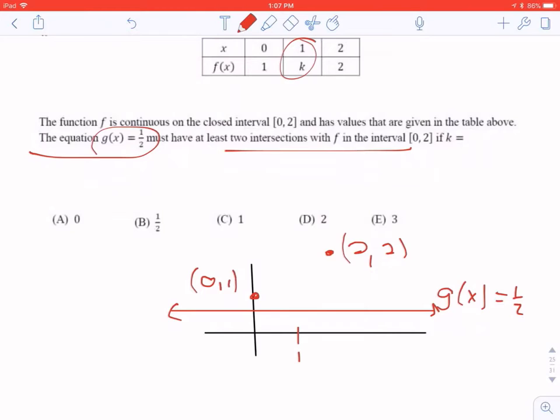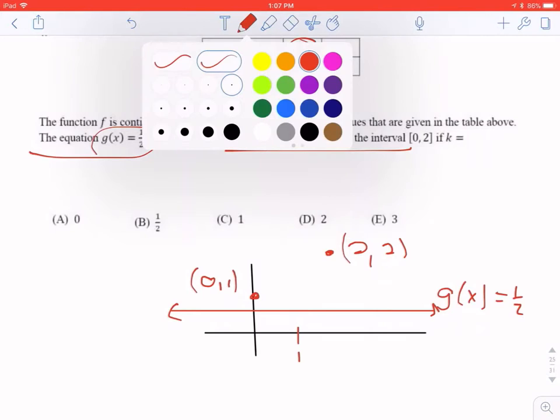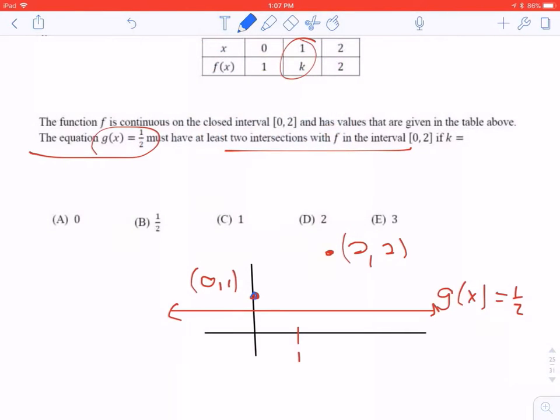So the function is continuous, and the equation g of x, that's this red line here, must have at least two intersections with f. So f is a function that has to go through this, it has to go down here, and it has to go back up to get to 2. We know it has to go down there because there's at least two points of intersection. So, what could k be?